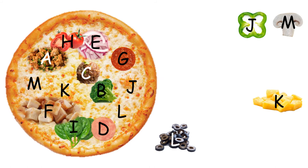Okay, we have A, B, C, D, E, F, G, H, I. Next comes J. We have four toppings left. There it is — J is on the green peppers.